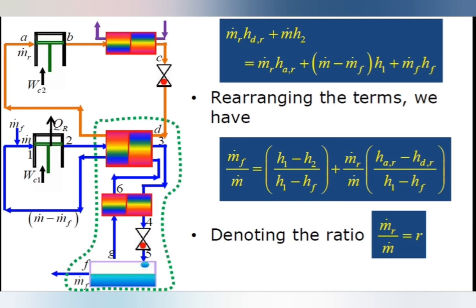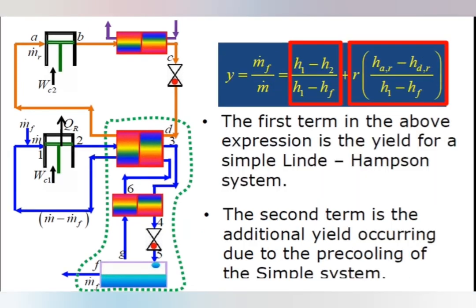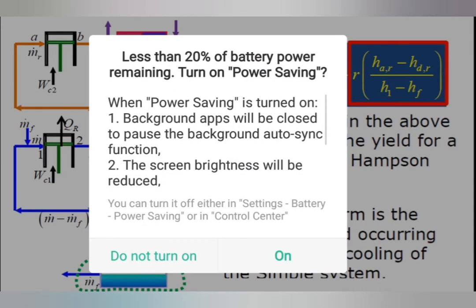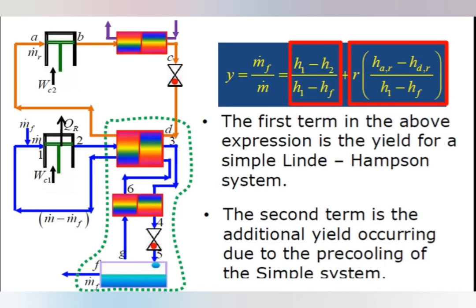The term M-dot-R divided by M-dot is denoted as small letter r. So finally, the yield expression can be divided into two portions. The first portion represents the yield corresponding to the simple Linde-Hampson system. The second portion represents the additional yield attained by adding the pre-cooling system. It is clear that by adding a pre-cooling system, we can increase the amount of yield — and that is the advantage of the pre-cooled Linde-Hampson system.